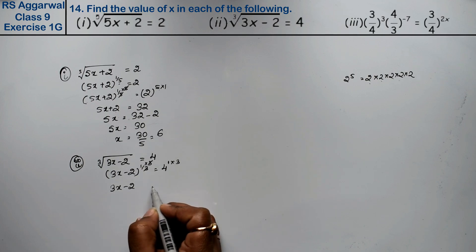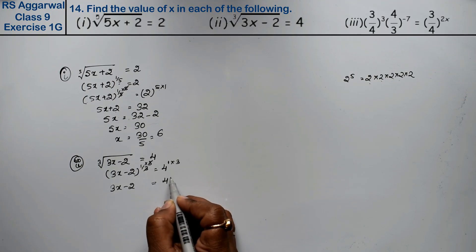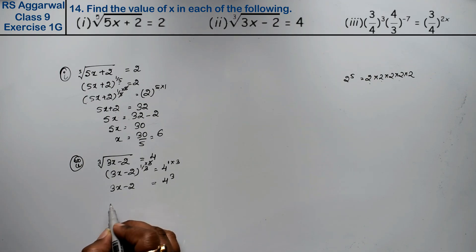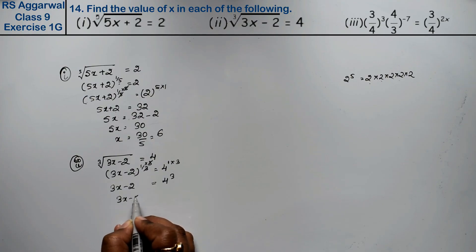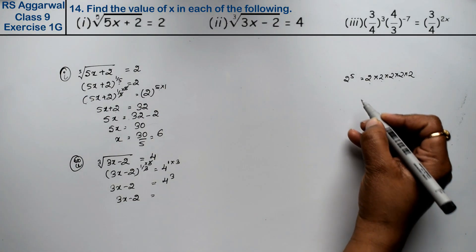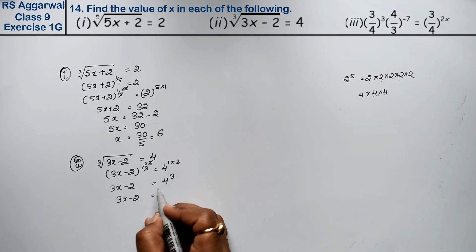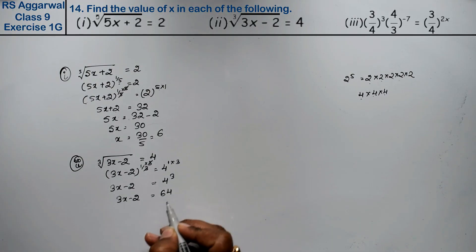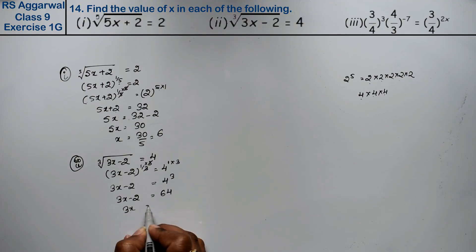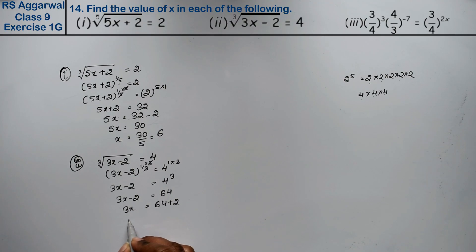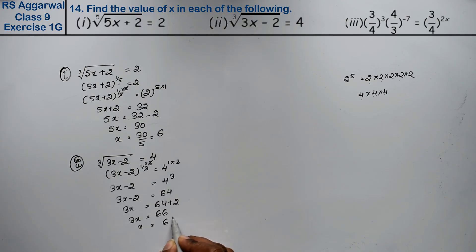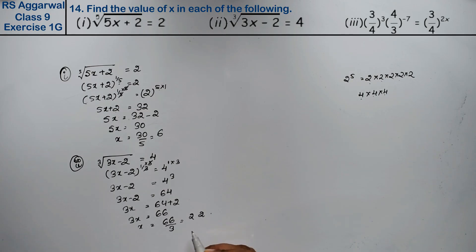After raising both sides to the power 3, the 1/3 and 3 cancel, giving 3x − 2 equals 4 to the power 3. That means 4 × 4 × 4: 4×4=16, 16×4=64. So 3x − 2 = 64, meaning 3x = 64 + 2 = 66. Therefore x = 66 ÷ 3, which gives x = 22 as the answer.